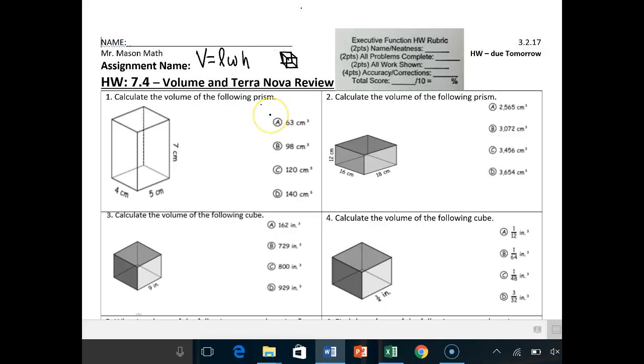Number one, this is calculate the volume of the prism, a three-dimensional shape. You're going to multiply the length times the width times the height. So volume equals length times width times height. You have 4 times 5 times 7. When you multiply that out, that will give you 140 centimeters cubed.